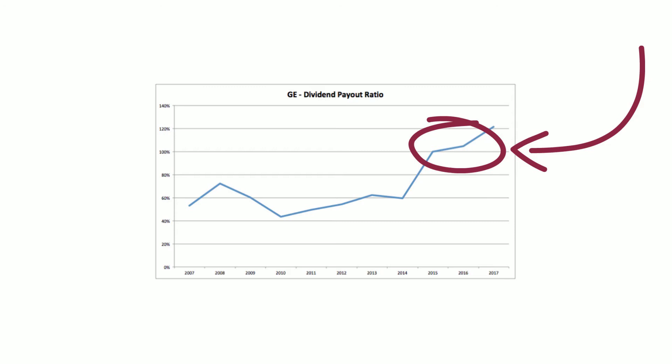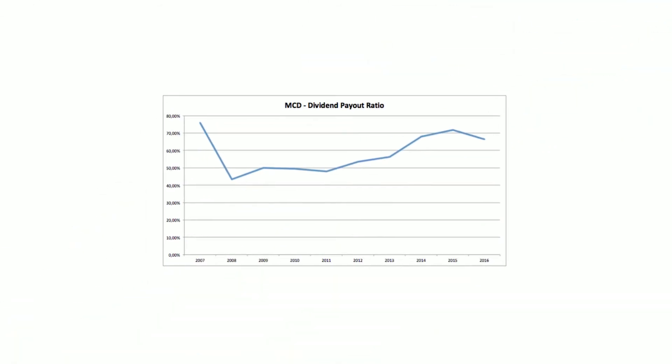I avoid these types of companies like the plague. Another scenario you have to pay attention to is if the payout ratio keeps increasing year over year — you always want to see consistency. Seeing an increase means that the company is gradually, and sometimes drastically, paying more of its net income out to shareholders as a dividend. This is not a deal breaker, but something to keep an eye on.